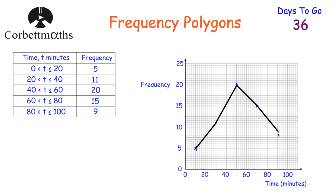One thing to note is that you don't join up the first point and the last point. Some people try to draw a polygon, but you're actually just joining up the first to the second, second to the third, third to the fourth, and the fourth to the fifth. We've drawn our frequency polygon — if you drew that yourself, well done.